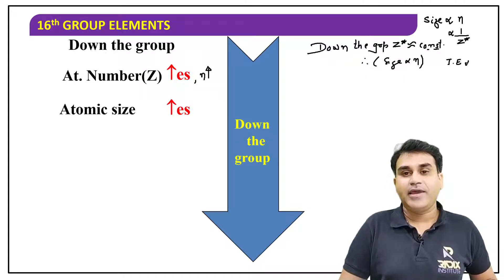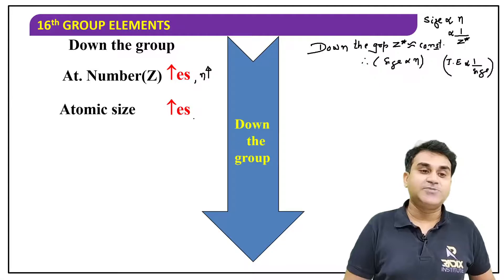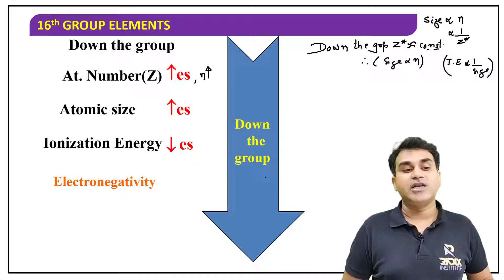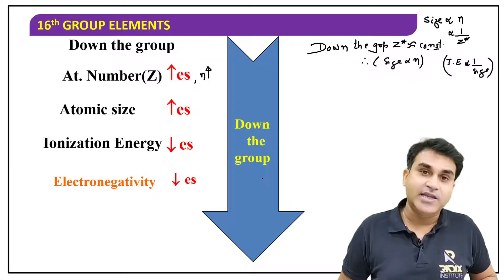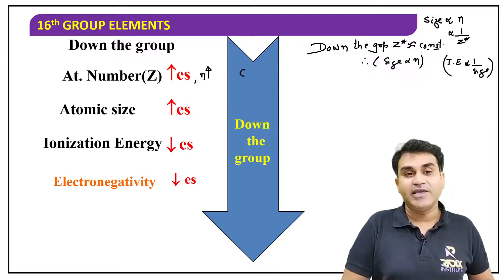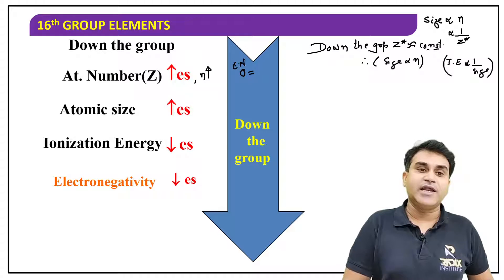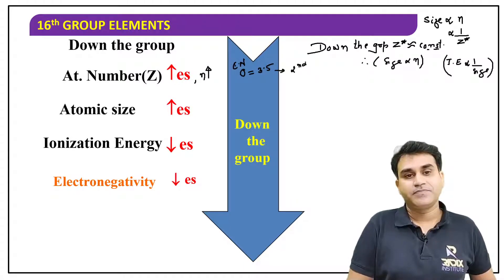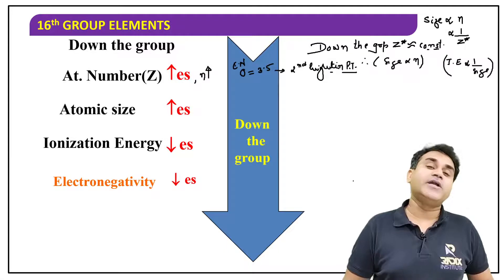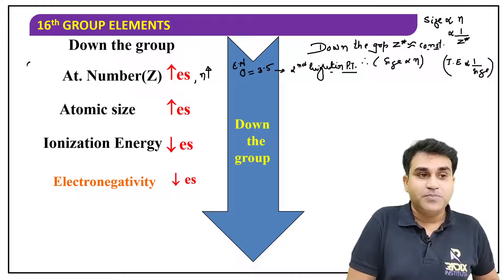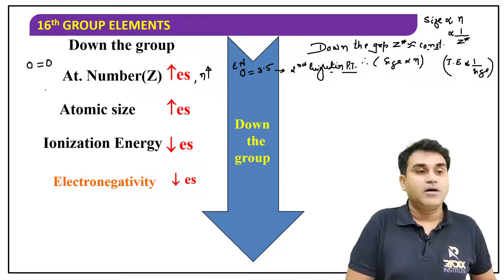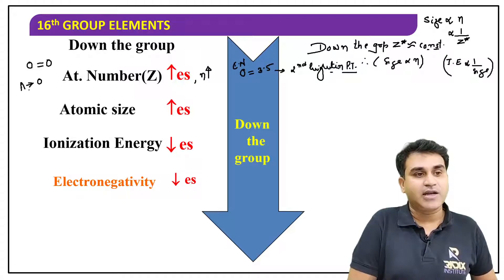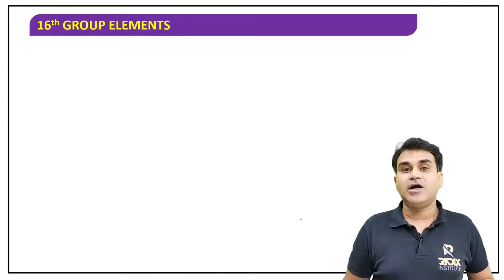Ionization enthalpy is inversely proportional to size. Size is increasing, so ionization energy will decrease. Electronegativity will also decrease down the group. Oxygen's electronegativity is highest in the group — it is the second highest in the entire periodic table at 3.5.